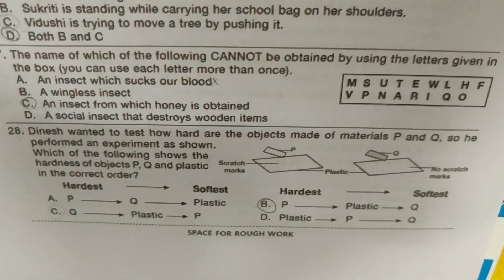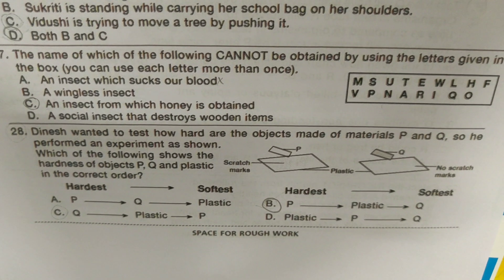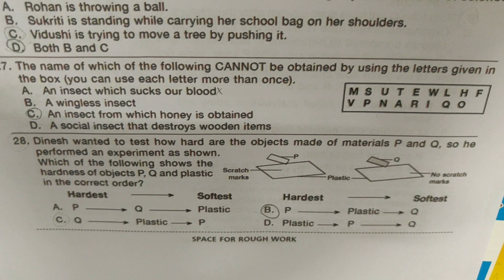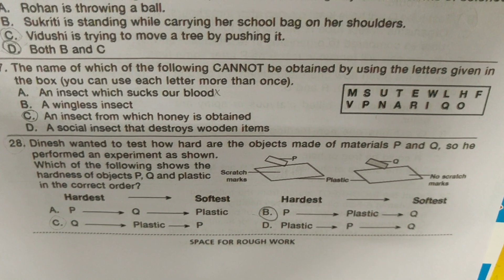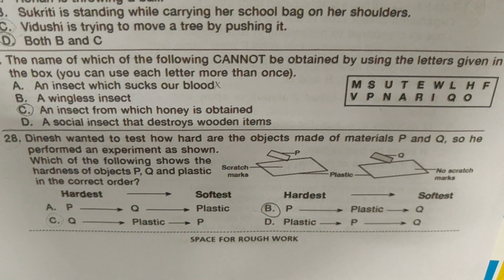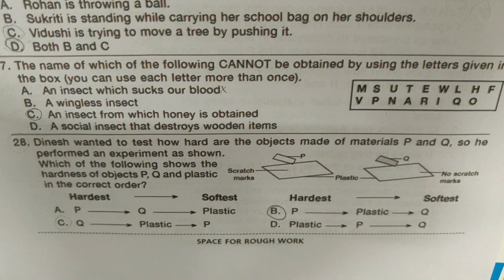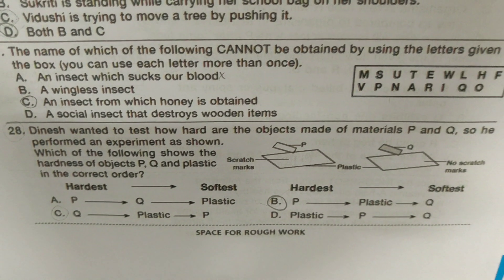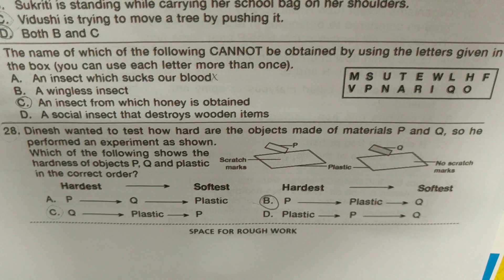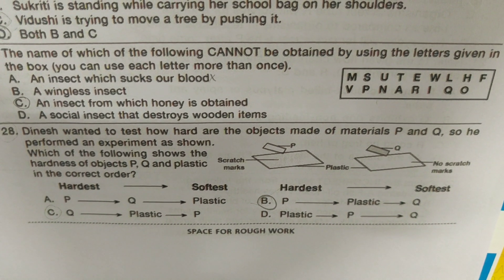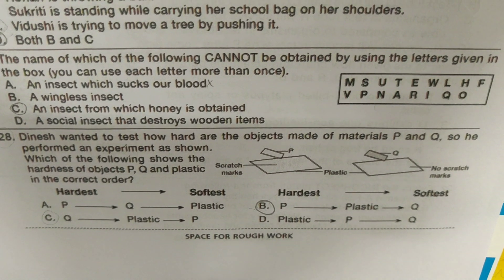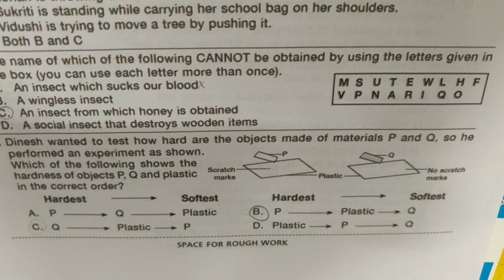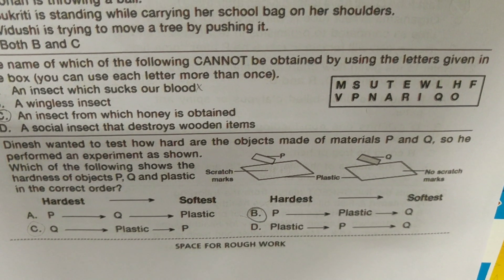The name of which of the following cannot be obtained by using the letters given in the box — you can use each letter more than once. It's an insect from which honey is obtained. I feel like it's a bee and there is no bee.